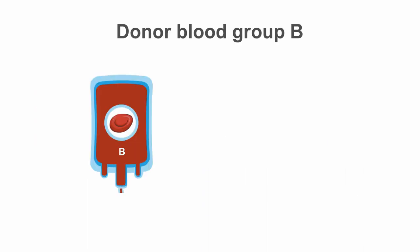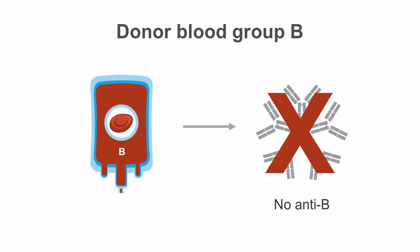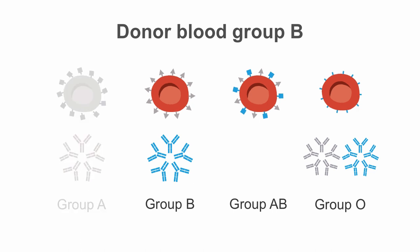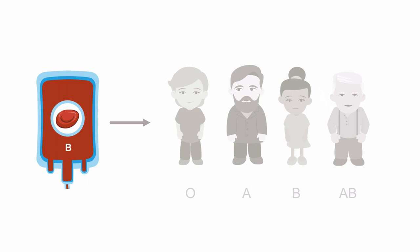The same applies for blood from group B donors. We cannot give it to individuals who have anti-B in their plasma. So do not give it to patients with blood group A or group O. Only give type B blood to patients with group B or AB.